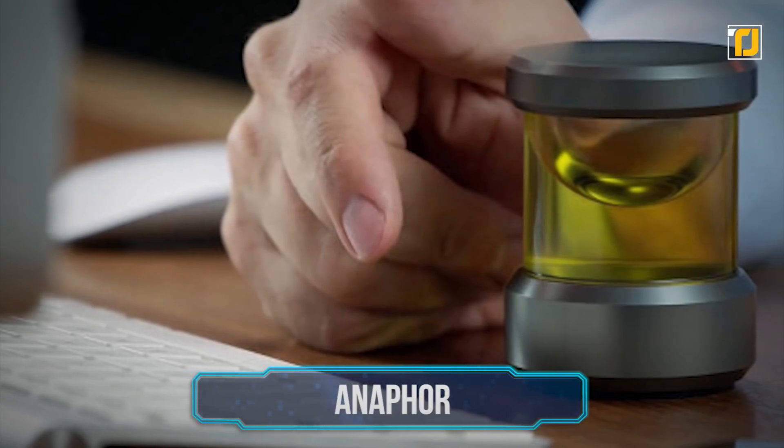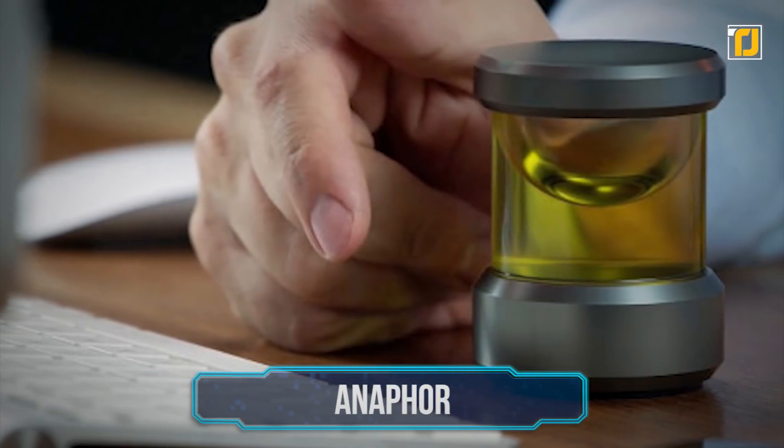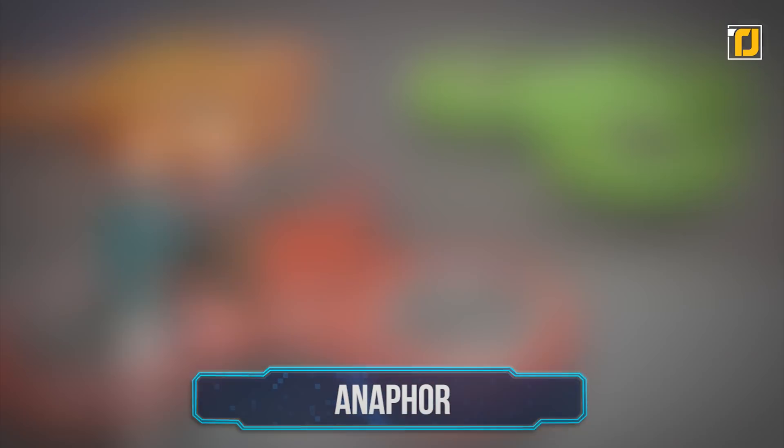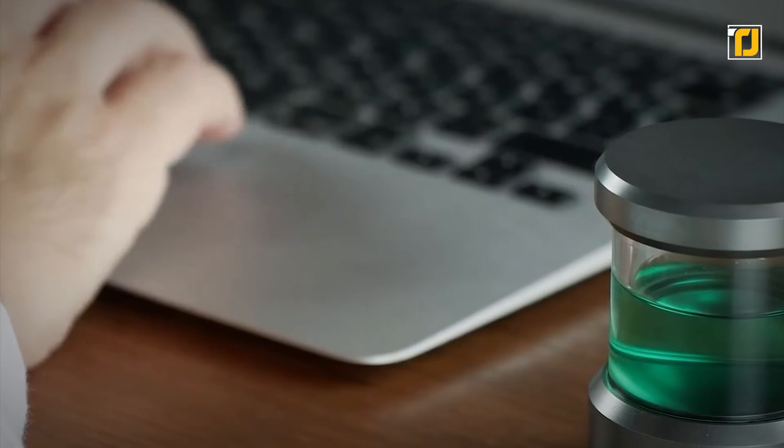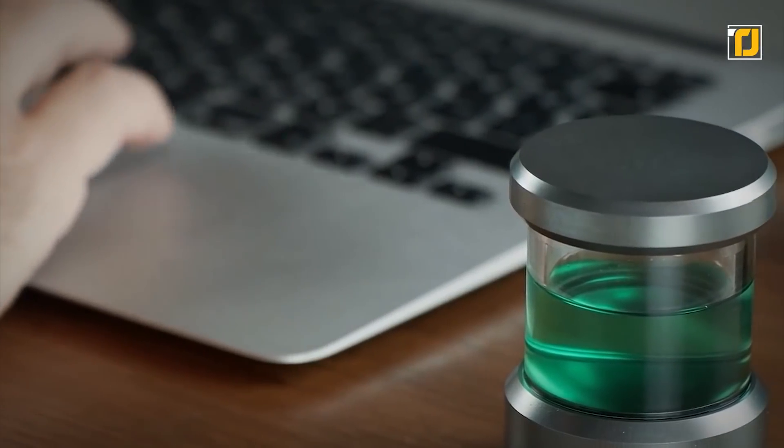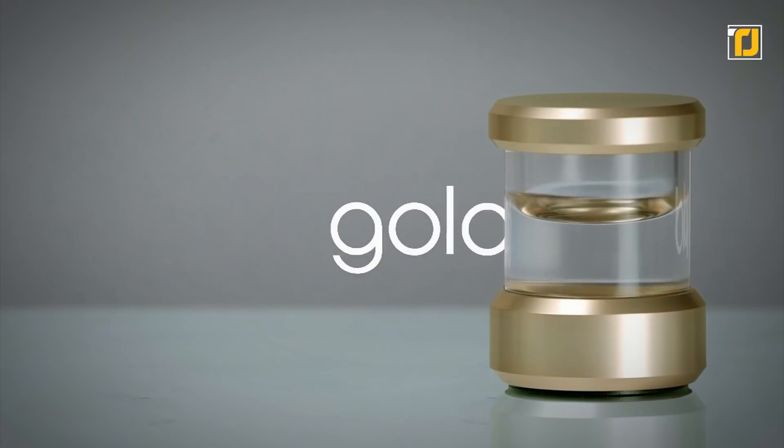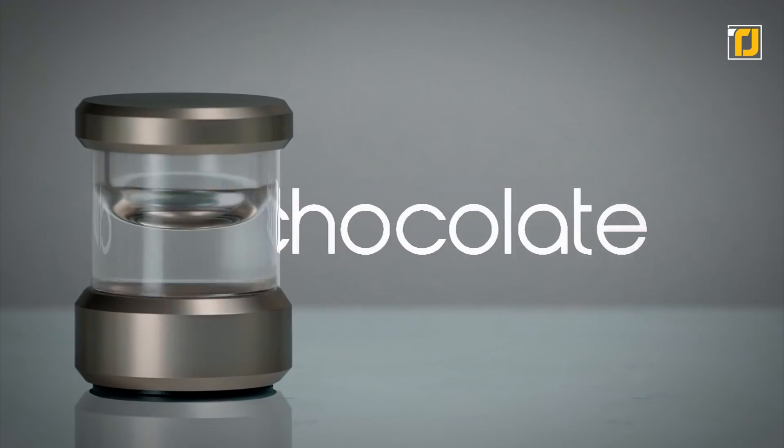Number 14. Anaphore. Fidget spinners are cool, sure, but they're definitely not as mesmerizing as the anaphore. The anaphore is a cool fidget toy that you can enjoy. It comes in five colors: gold, rose, chrome, chocolate, and ice.